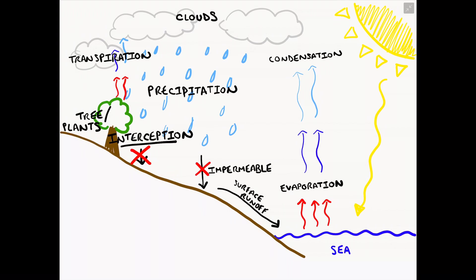Alternatively, this precipitation could fall onto ground which is permeable, such as clay, sand, or grass. This type of surface will allow the water to infiltrate, to soak into it like a sponge. This permeable ground will absorb some of the water from the precipitation and allow it to filter into the ground through the process of infiltration.